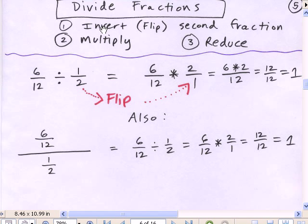Dividing: first you invert the second fraction, and then multiply, and then reduce. You can also think of it as flip. So here it is, 6 divided by 12 divided by 1 half. Flip it, just flip it upside down like that, 2 over 1. And then you simply do your multiplying.